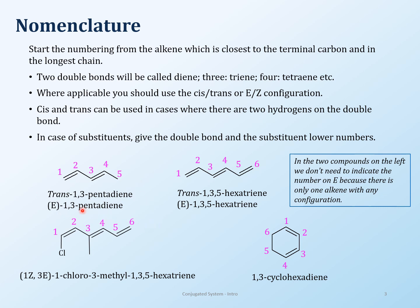Looking at the first example: numbering gives us 1,3-pentadiene. The 1,2 double bond doesn't get E/Z because there are two hydrogens on carbon 1, so only the 3,4 double bond has stereochemistry. This one is E — the hydrogens go in opposite directions (trans), and the higher atomic number groups on carbons 2 and 5 are also in opposite directions. You can use trans here as well since there are two hydrogens on carbons 3 and 4.